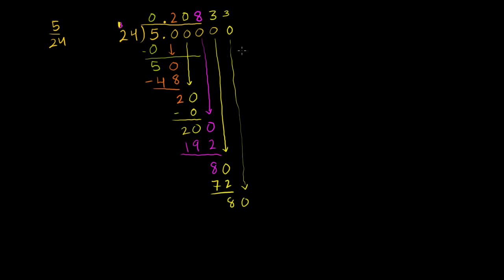So 5 over 24. I want you to understand why it keeps repeating. Every time we do this now, we're going to get a 3 and come down, get a 72. 80 from 72, we're going to get another 80. And we're just going to have a big string of 3's there. So 5 divided by 24 is 0.2083 repeating. Now, if we want to write this as a percentage, the word percentage, the word percent. Percent. Cent comes from the word for 100. This is per 100.